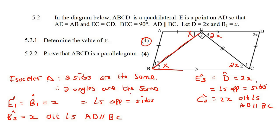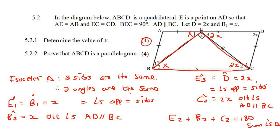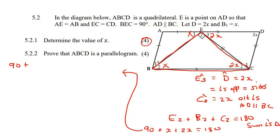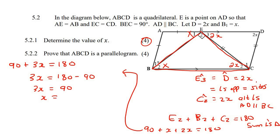Now, if you look inside this triangle, all those angles should add up to 180. So we say angle E2 plus angle B2 plus angle C2 must add up to 180 — because of the sum of angles in a triangle. E2 is 90, B2 is X, C2 is 2X. So 90 plus X plus 2X equals 180, which gives 3X equals 90.